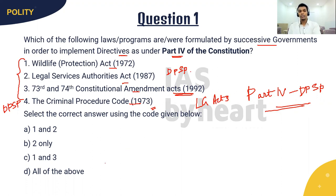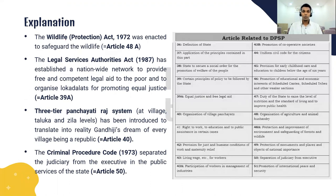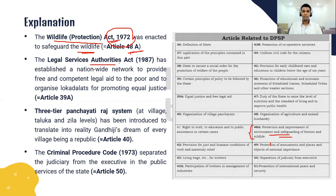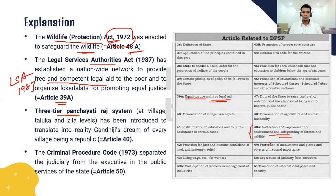The answer is all of the above — all the above laws deal with one or the other DPSP. The Wildlife Protection Act was enacted to safeguard wildlife in 1972 and is associated with Article 48A, which deals with protection and improvement of the environment and safeguarding of forests and wildlife. The Legal Services Authorities Act provides free and competent legal aid to the poor under Article 39A, which states equal justice and free legal aid especially for poor and weaker sections — done by the LSA Act of 1987.